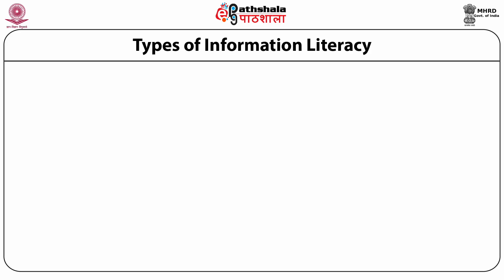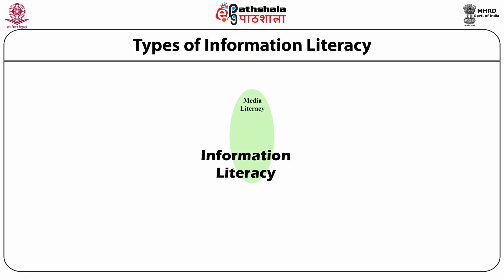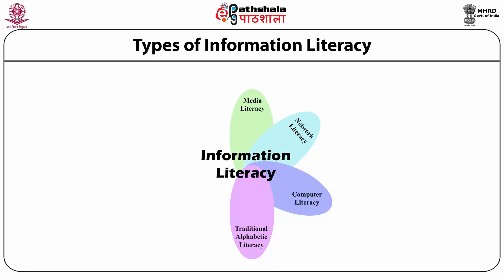This is a visual show of the types of information literacy. The main components which include information literacy are: media literacy, network literacy, computer literacy, traditional alphabetic literacy, library instruction, cultural literacy, and visual literacy. These can be called components of information literacy.